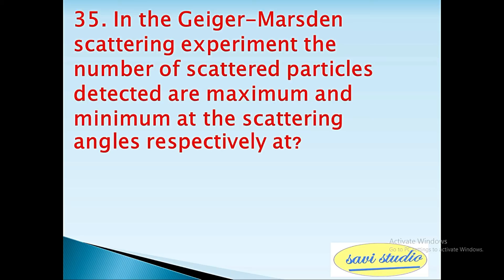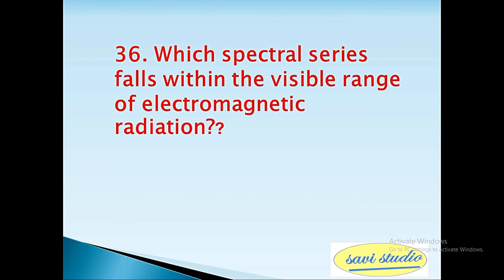35th question: In the Geiger-Marsden scattering experiment the number of scattered particles detected are maximum and minimum at the scattering angles respectively at? Answer: 0 and 180 degrees. 36th question: Which spectral series falls within the visible range of electromagnetic radiation? Answer: Balmer series.